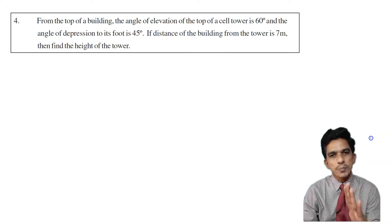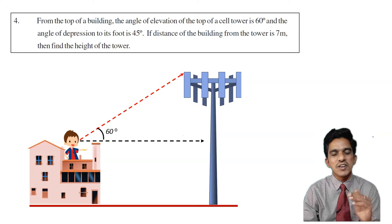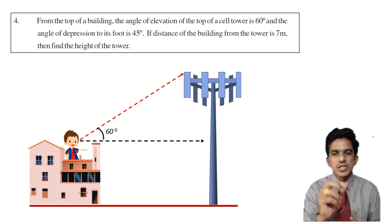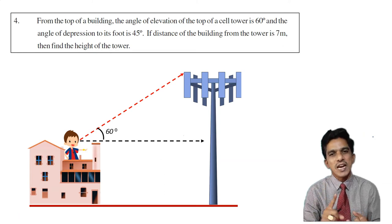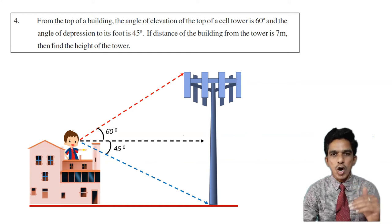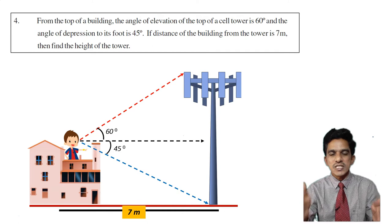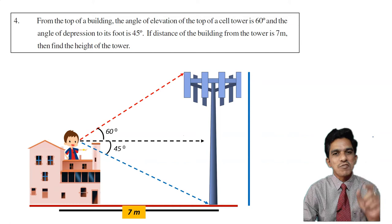We have an angle of elevation equal to 60 degrees and an angle of depression of 45 degrees. If the distance of the building from the tower is 7 meters, we have to calculate the height of the cell tower.